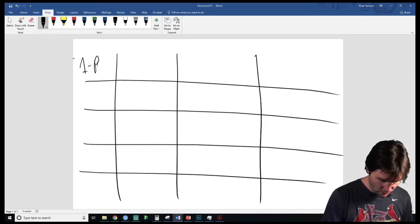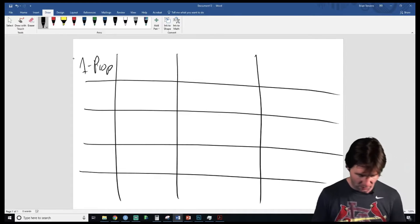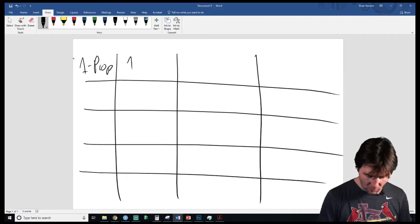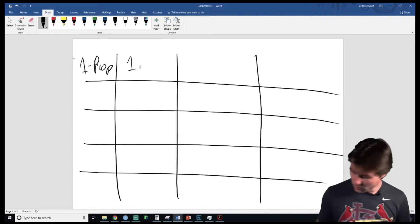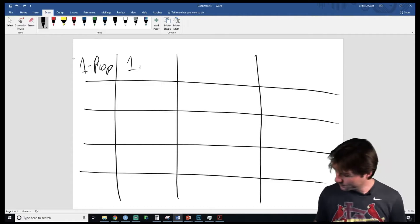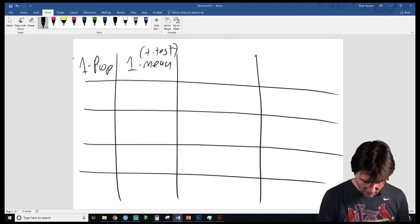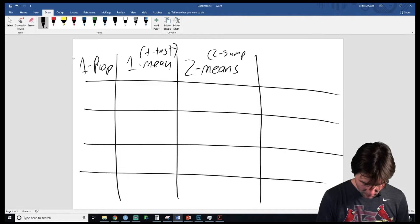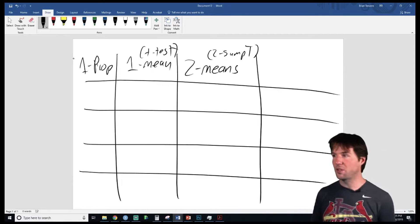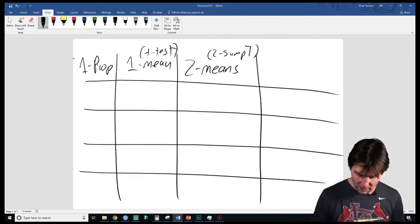This is one proportion. We'll come back and do that as a review question. And this is one mean, right here. This is a t-test. This is two means, and this is a two-sample t-test. That says two-sample t right there, and then this is chi-square.